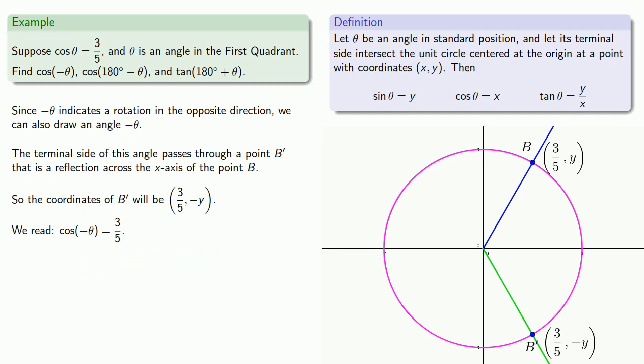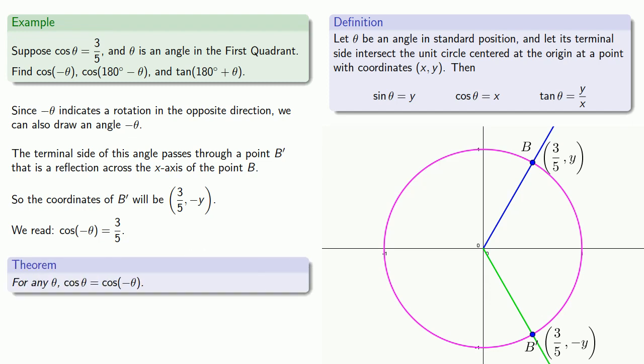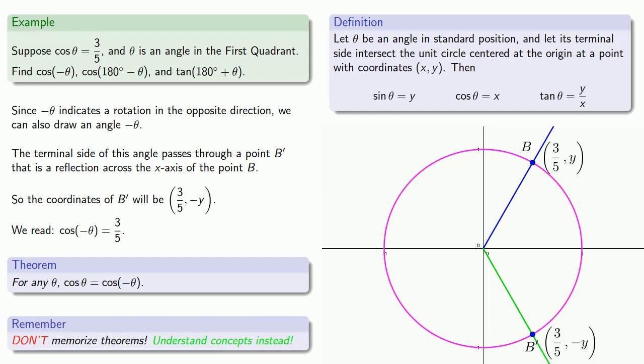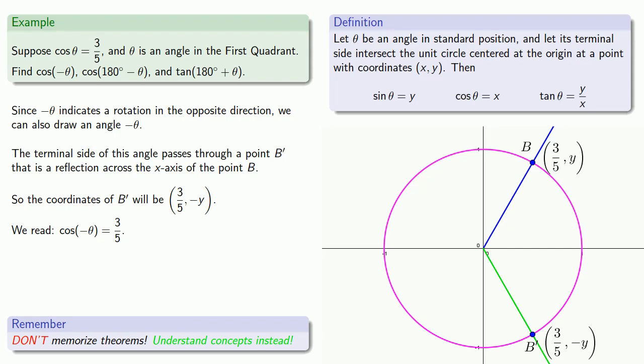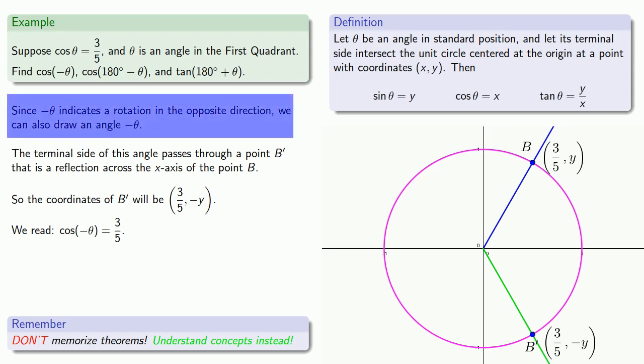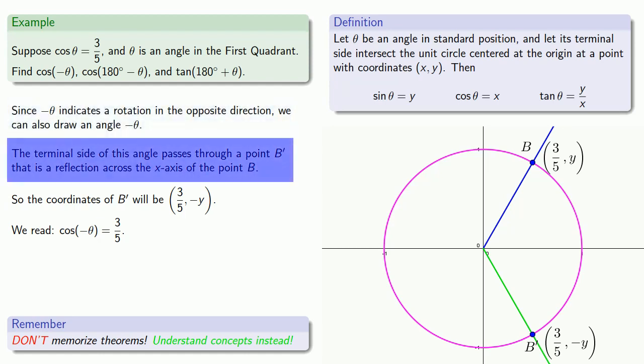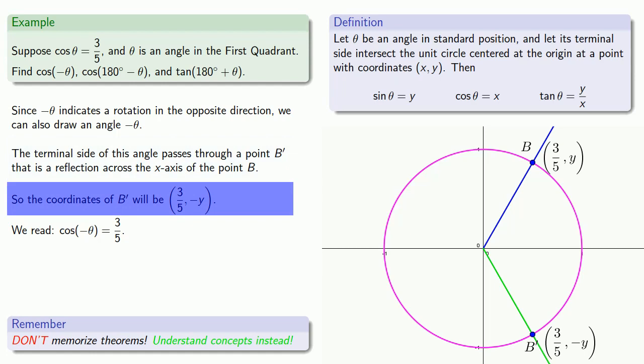Now this is an example of a very useful theorem. For any angle θ, cosine(θ) equals cosine(-θ). But here's an important point: don't memorize theorems — understand concepts instead. You're better off letting this theorem fade from your memory. Instead, understand the process: that θ and -θ indicate rotations in opposite directions, that we have a reflection of our point across the x-axis, and that cosine is the x-coordinate.